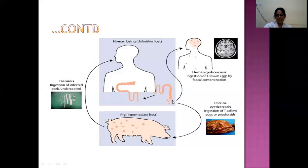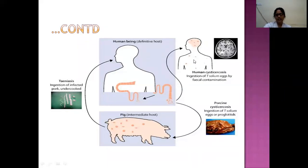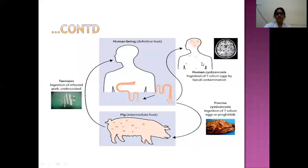In cysticercosis, however, the gravid proglottids excreted through feces are ingested by another human host. When ingested, they turn into oncospheres, which are transported to various host tissues. Within these tissues they transform into cysticerci, causing the infection called cysticercosis. That is the key difference between taeniasis and cysticercosis.